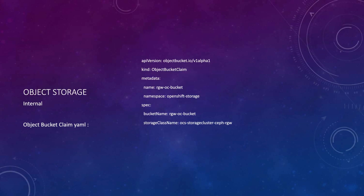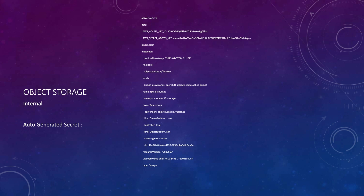The first thing you need to do is create an object bucket claim on OpenShift Data Foundation. On the right side, you can see the YAML file. In this YAML file, you specify the kind as object bucket claim and then provide a name like 'RGW OC bucket'. You then need to specify the storage class name as mentioned in this chart. The moment you create this object bucket claim, OpenShift Data Foundation will automatically create a secret for you. Internally, to access the RADOS gateway based object store, there is a user ID, password, and credentials — those credentials will be retrieved and used to create this secret.